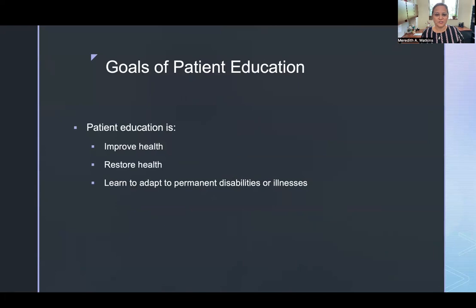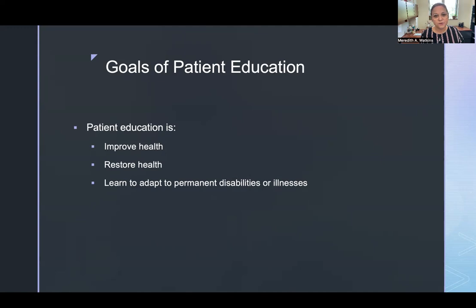There are three goals of patient education. We want to use patient education to improve health, restore health, and help patients adapt to permanent disabilities or illnesses. To improve health, we might talk about drinking more water, taking walks, or eating more vegetables. To restore health, maybe someone falls and breaks a hip, and we teach them the different processes to get back to health at each stage of healing. And for chronic conditions, like a newly diagnosed type 1 diabetic, we teach them to adapt to those permanent disabilities or illnesses, such as checking their blood sugars for the first time.